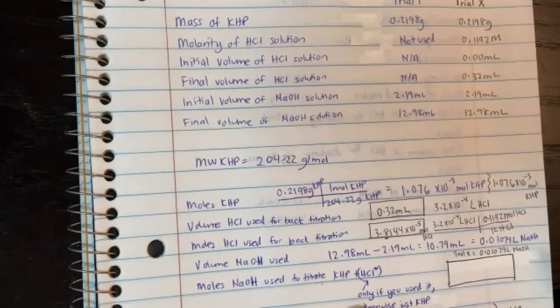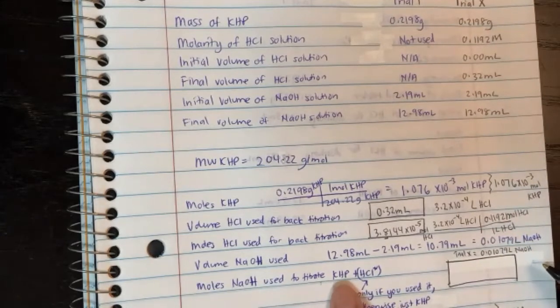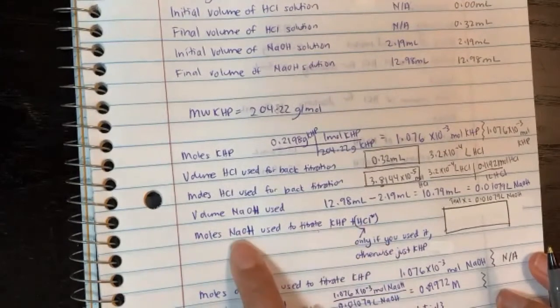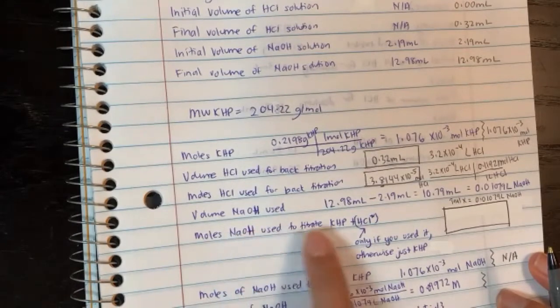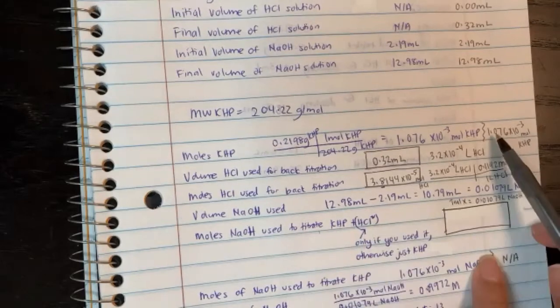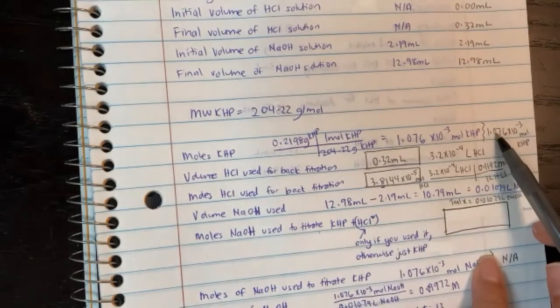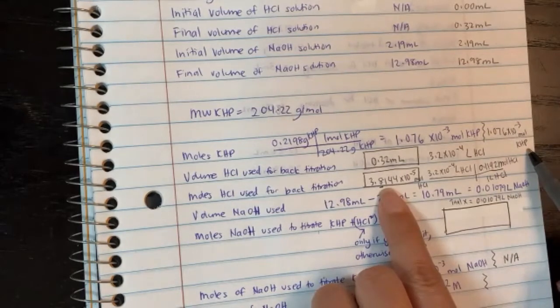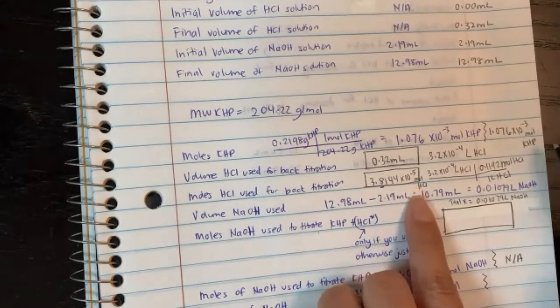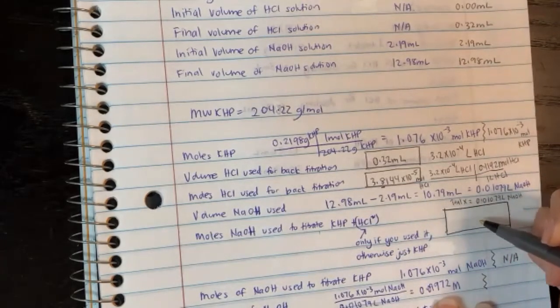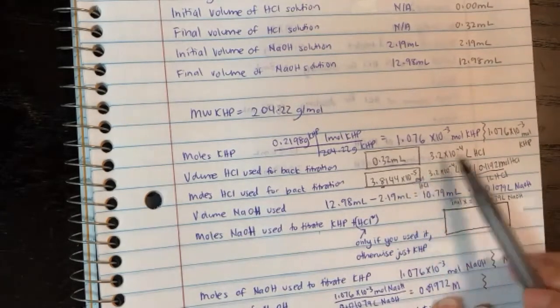Now, this is the part where it's different now because we had to use KHP and HCl as both acid sources to titrate with NaOH. So basically the moles of NaOH now equals to this and this moles added together. So that would be 1.076 times 10 to the minus 3 moles of KHP plus this number here, 3.8 times 10 to the minus 5 moles of HCl. So let me go ahead and write this down.